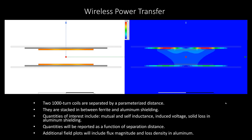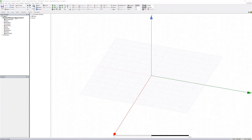This video details how to set up and model a wireless power transfer system. We'll look at two 1000-turn coil stacks separated by a parameterized distance, varying this distance in our study to examine the mutual inductance as a function of separation. The coils are backed between ferrite and aluminum shielding, and we'll examine the effect of aluminum shielding and the ohmic losses induced in it. First, start with a 3D design and change the solution type to eddy current.